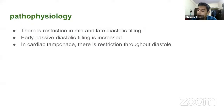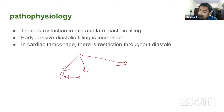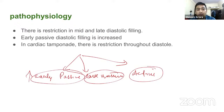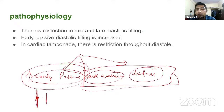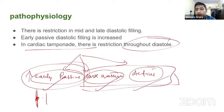Ventricular filling can be divided into three phases: early passive, late passive, and active filling involving atrial contraction. In constrictive pericarditis, early passive filling is increased while late passive and active filling are restricted, because during early passive filling the ventricles expand and hit the thickened pericardium. In contrast, in cardiac tamponade there is restriction throughout diastole — all early, late, and active filling is restricted — leading to differences in pathophysiology between the two conditions.